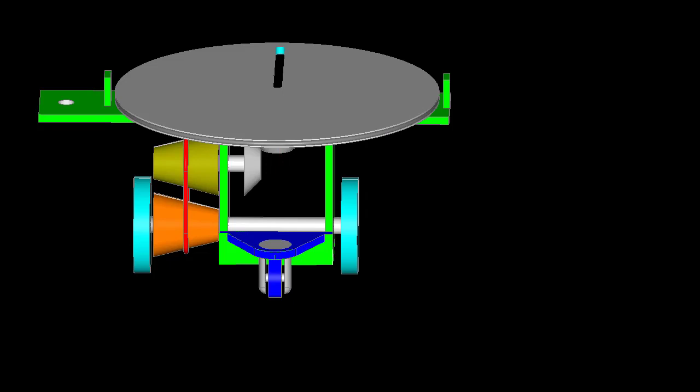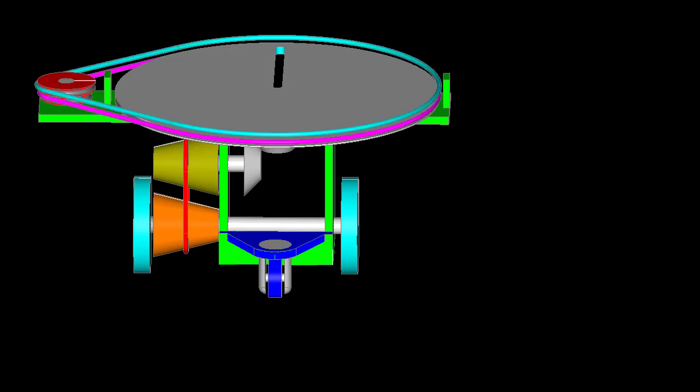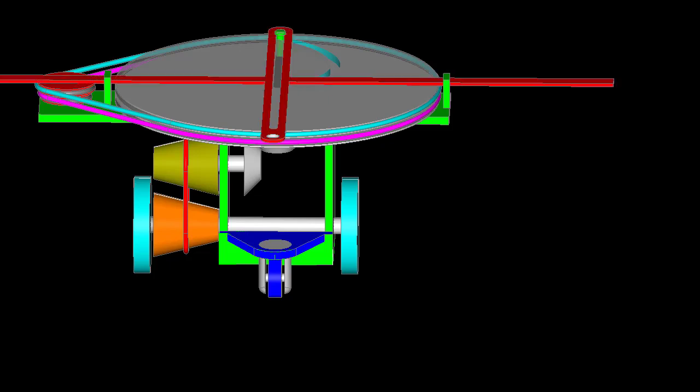Then through the belt the motion will go to this compound pulley and then via this belt it will come to the top disc and then through this pin it will be given to the slotted link. And from this slotted link it will come to a pencil. And now let us see how the whole thing would move.